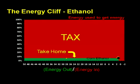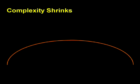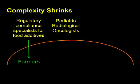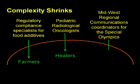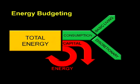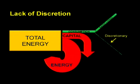With less surplus energy, less societal complexity is possible. Under an ethanol regime, many cherished job positions would simply vanish. Regulatory compliance specialists for food additives would revert to being farmers. Pediatric radiological oncologists would become healers. Midwest regional communications coordinators would have to find something else to do. If we tried to live on ethanol as a liquid fuel, we'd quickly lose nearly all the specialized jobs associated with modern society, because there would be practically no surplus energy to support that complexity.